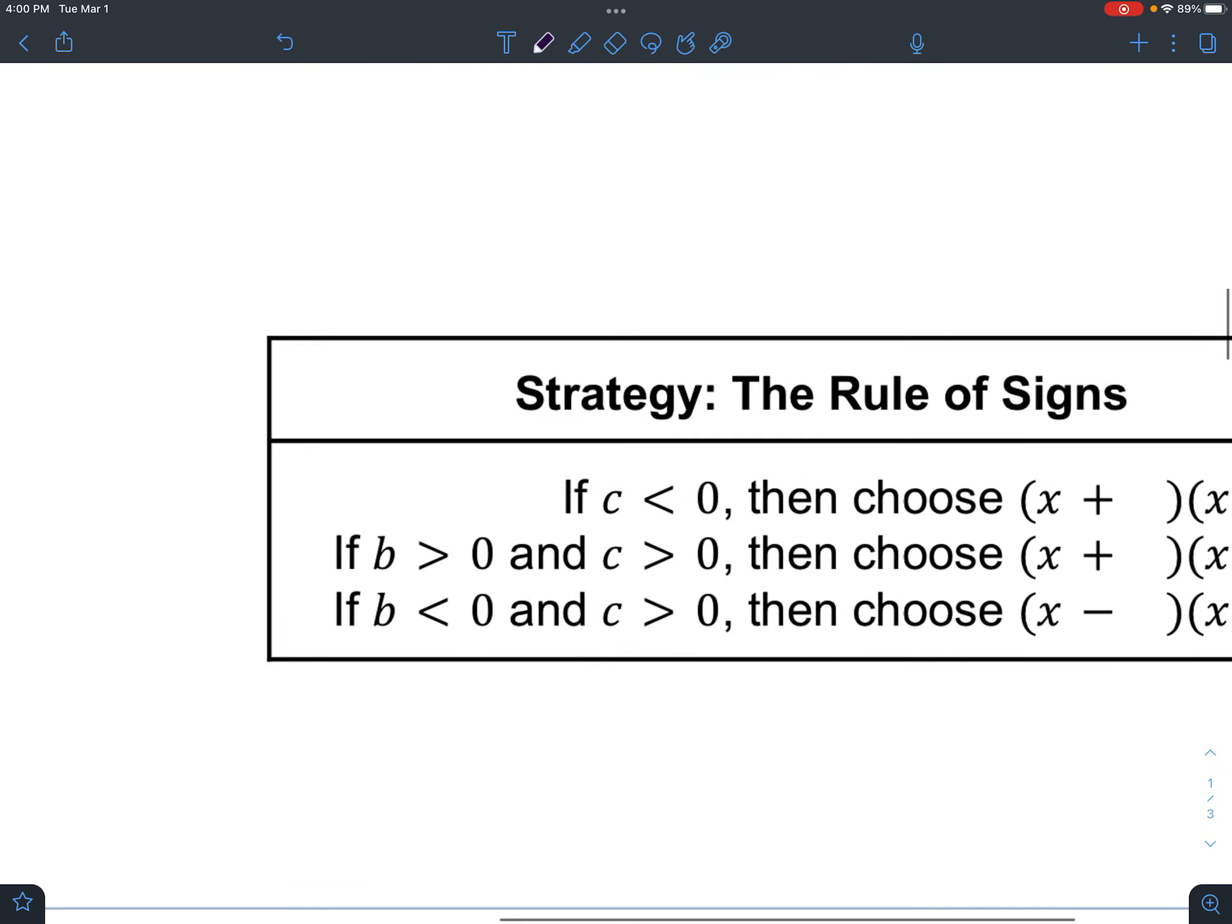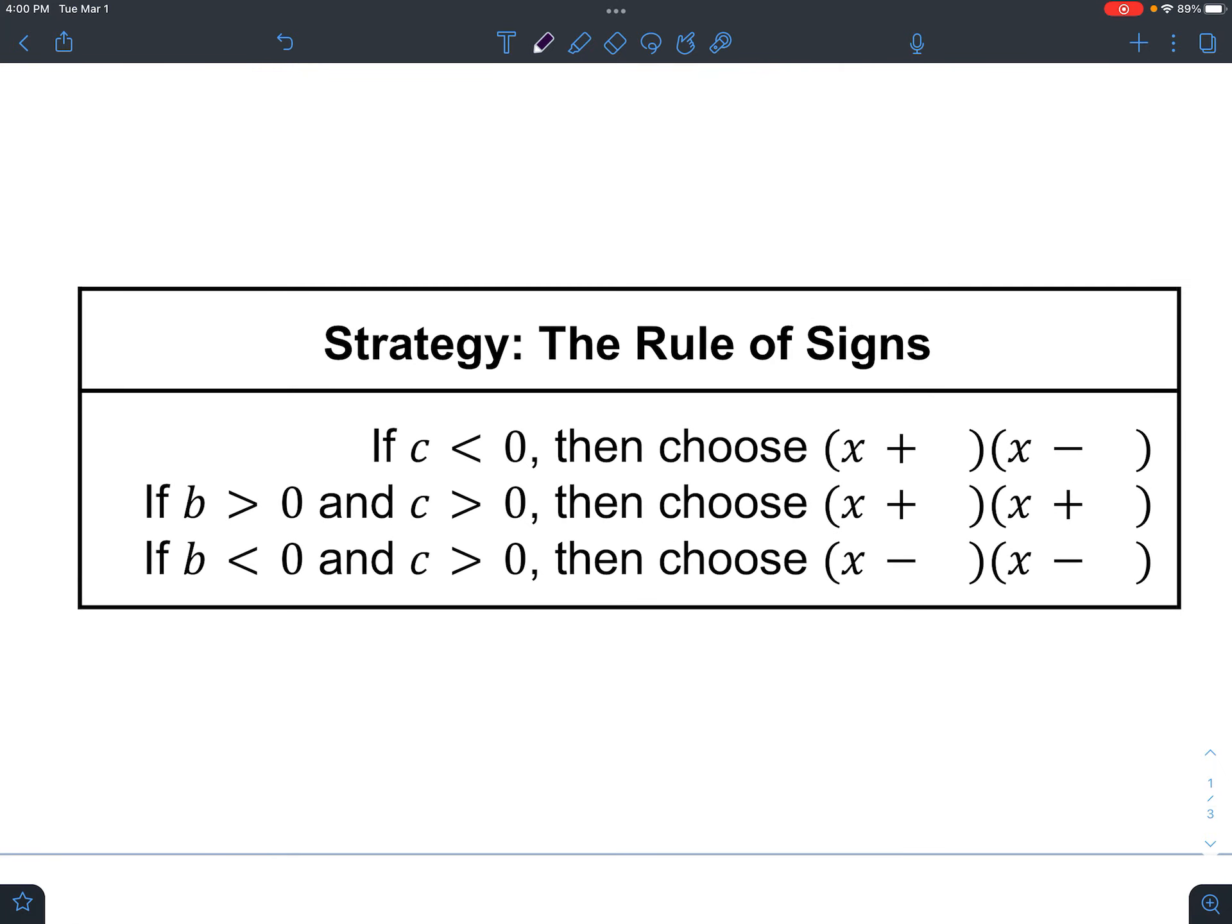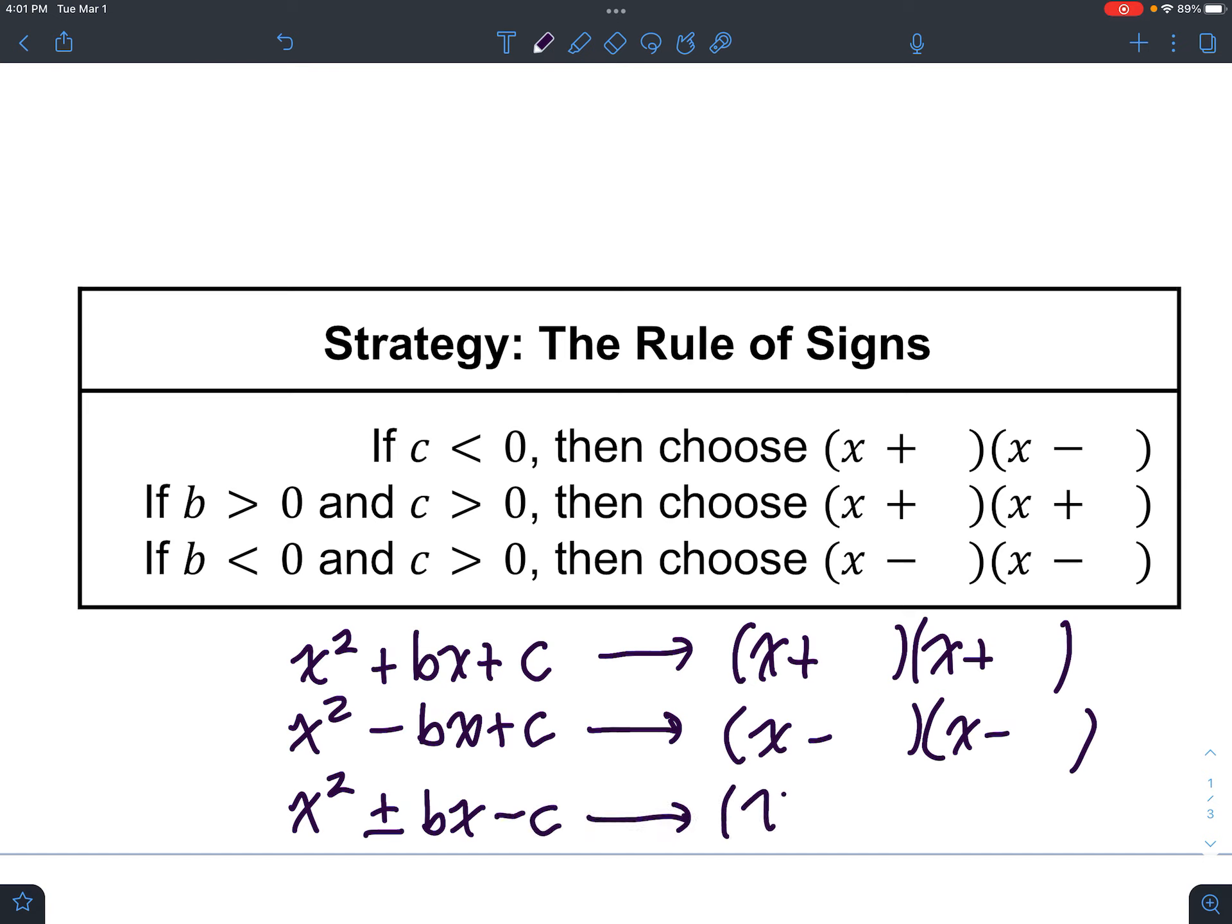Okay. So now is a good time to go down to here. And I want to write this in a different way too. Basically, if you have double plus, you're going to pick double plus. If you have a minus and a plus, you're going to pick double minus. Because this plus is still guaranteed. Because a minus times a minus is a plus.